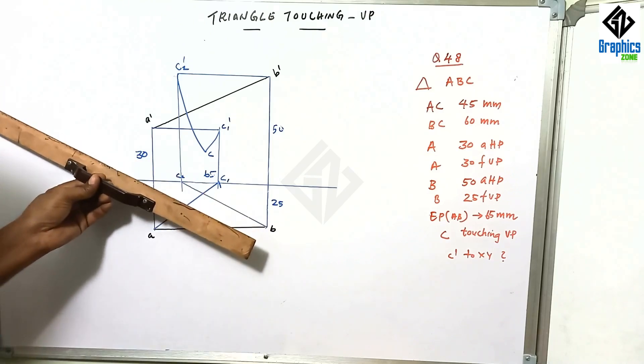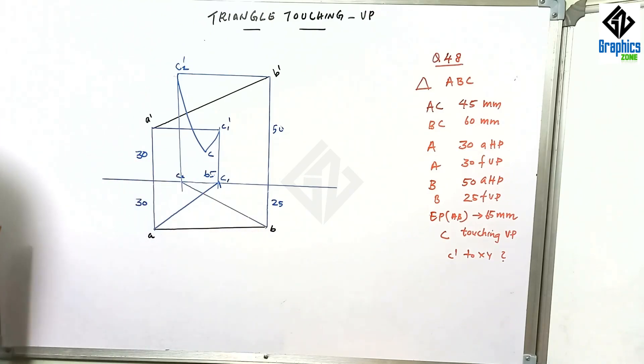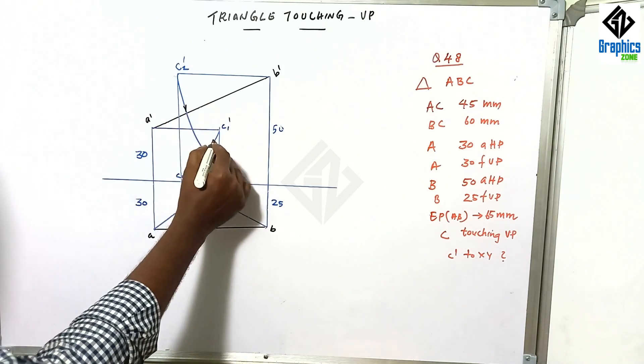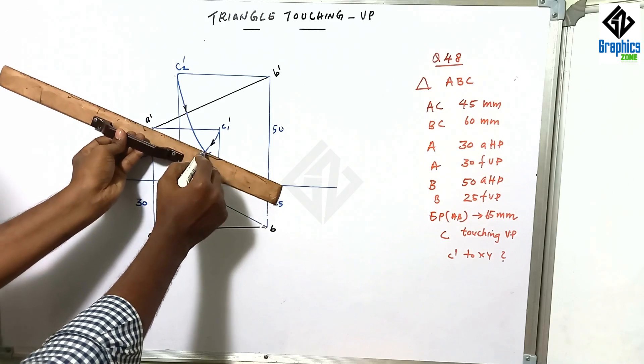This is the arc. This is the arc. So this is the point C.